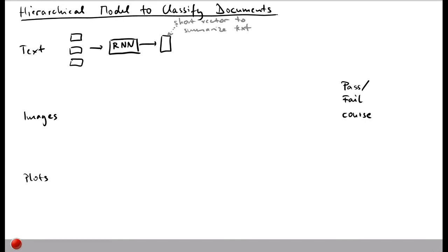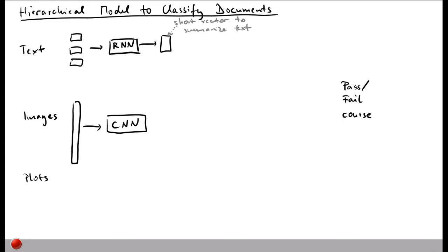For images in our document we do something different, because images are not text. Instead of treating all pixels as a huge vector, we use a convolutional neural network — a kind of network we'll look at in more detail in a later module. It recognizes different elements within the image and combines that information into one vector. What matters is that there is a specialized kind of network for this kind of input, and what we get is a short vector that represents the content of the image.